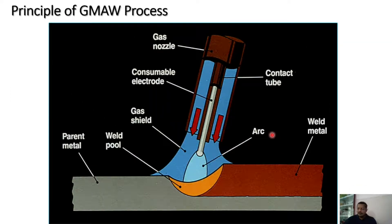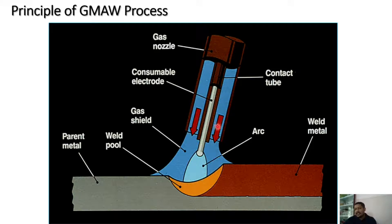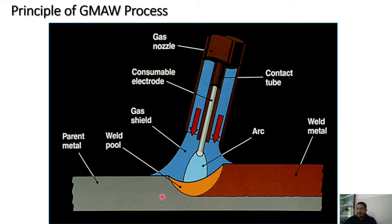In the GMAW process, the welding torch has the nozzle at its center, through which the consumable wire electrode is continuously fed. Shielding gas is supplied inside the nozzle, protecting the entire arc. The weld pool or molten weld puddle is the liquid metal area, and the welded area is left behind as the torch travels. The electrode is kept at a certain distance from the workpiece — the working principle is the same as previous arc welding processes.